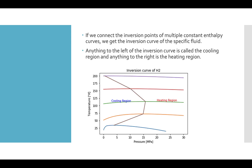If we draw multiple constant enthalpy T-P diagrams at different enthalpies and connect their inversion points — the point at which the slope is zero — we get the inversion curve. Anything to the left of the inversion curve has a positive Joule-Thomson coefficient, so it will cool as we drop the pressure. Anything to the right has a negative Joule-Thomson coefficient, and the temperature actually increases when we drop the pressure.